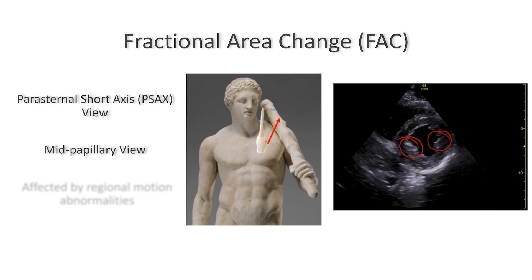One of the biggest limitations of the fractional area change when it comes to estimating ejection fraction is that it assesses contractility in only one plane at the mid-papillary level. So if you have severe regional motion abnormality in the apical or basal levels, that will overestimate the ejection fraction.